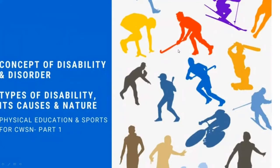Good morning students. We have completed our three units and now we are going to start our fourth unit: Physical Education and Sports for CWSN, meaning Children with Special Needs. In this lecture we are going to cover the objectives, concept of disability and disorder, types of disability, their causes and nature, and types of disorder, their causes and nature.